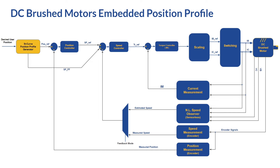The same applies when using a DC brush motor. The engine is in the same position in the architecture — the user provides the target position, and the engine creates the profile based on the user input and the current position of the motor, controlling the position respectively.